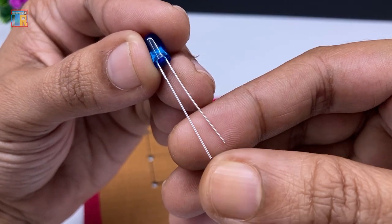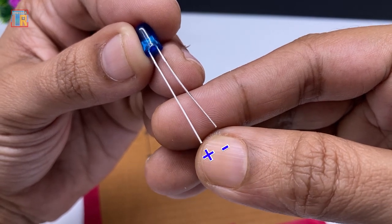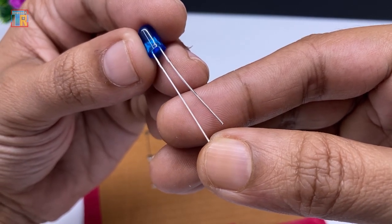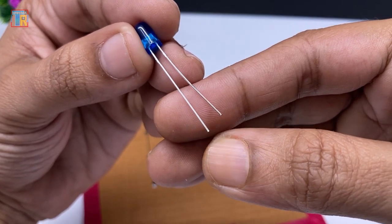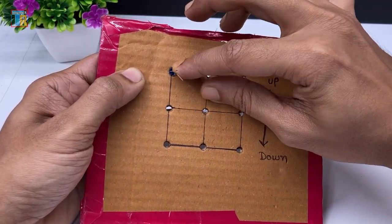You can see here one LED pin is slightly bigger than the other. The bigger pin is the positive and the smaller one is the negative. Carefully place the LED and bend the smaller pin downwards.